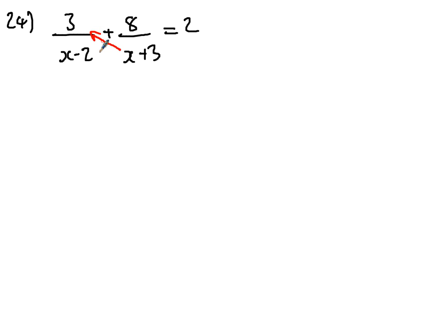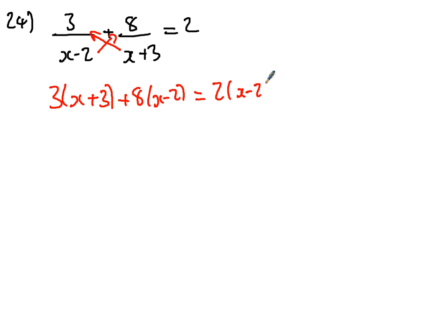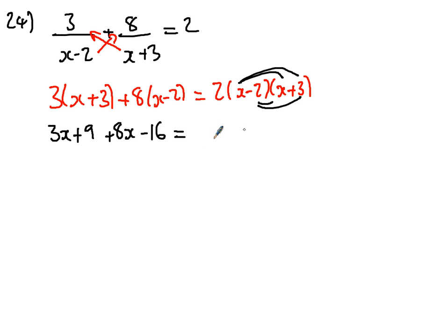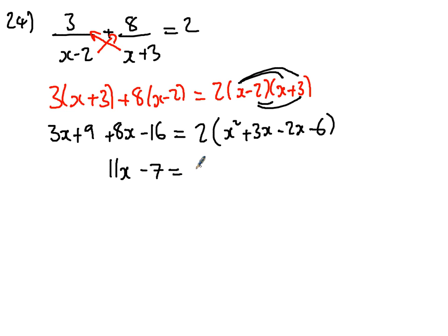Call it what you like — cross-multiplying — both denominators go onto the other side. We multiply everything through by both parts. The first bracket gives us 3x + 9; 8 times x is 8x, 8 times minus 2 is minus 16. On this side using the FOIL method: x times x is x², x times 3 is 3x, minus 2 times x is minus 2x, minus 2 times 3 is minus 6.